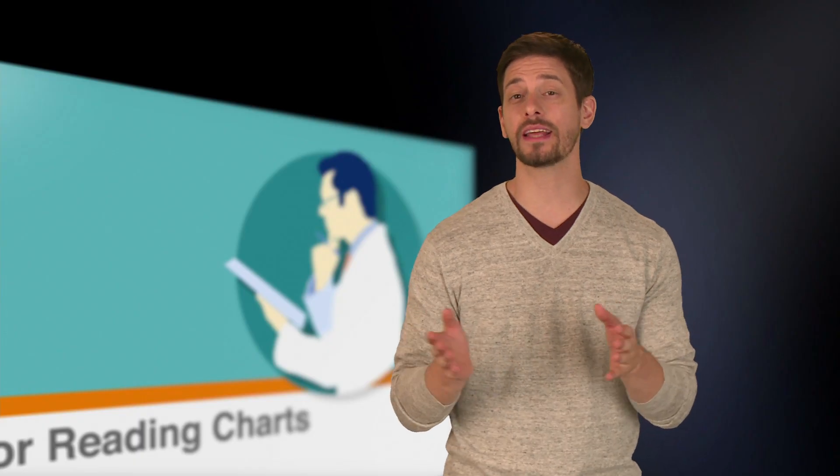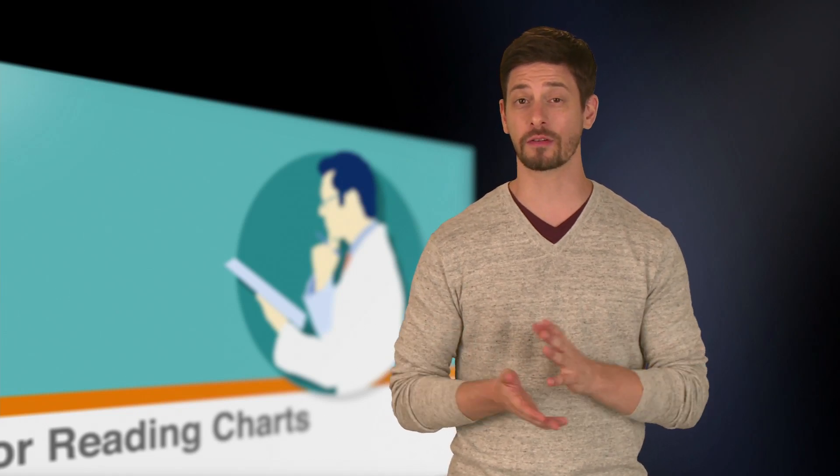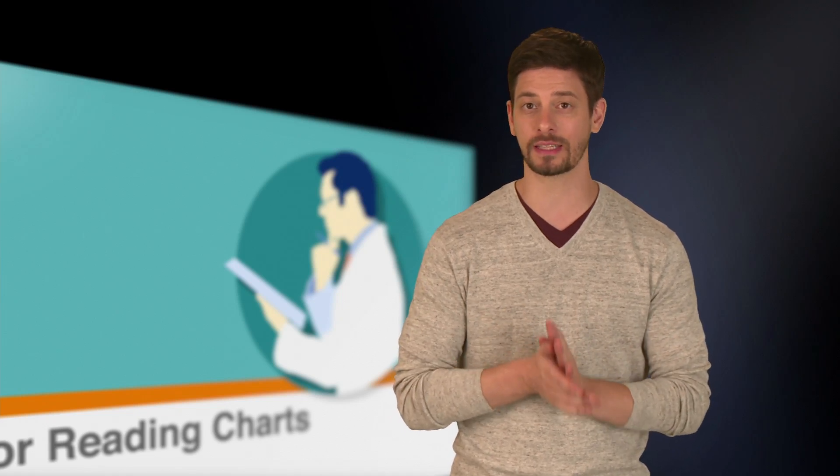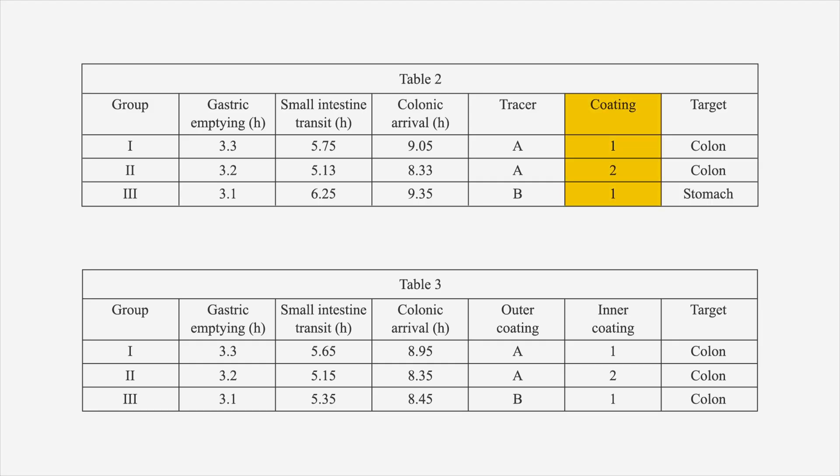Another thing to remember is that the columns of two similar charts in a passage don't always line up. The information in one column in one chart may be different in the column of a similar chart. As you can see in this example, the coding column in Table 2 is split into two coding columns in Table 3.